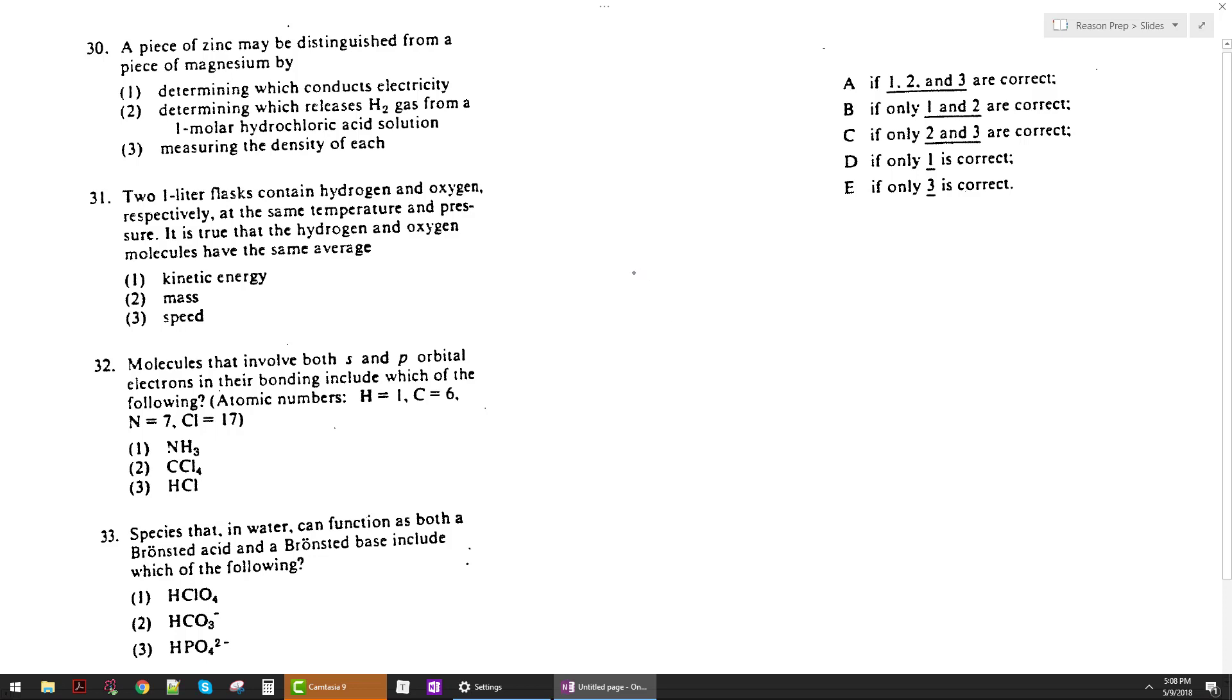A piece of zinc may be distinguished from a piece of magnesium by, well starting with one, which conducts electricity. Well no, they're both metals so they're both going to conduct electricity, so we're not going to be able to use that to distinguish them, to tell them apart.